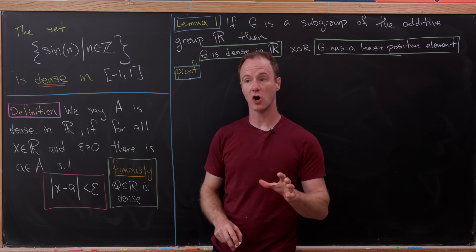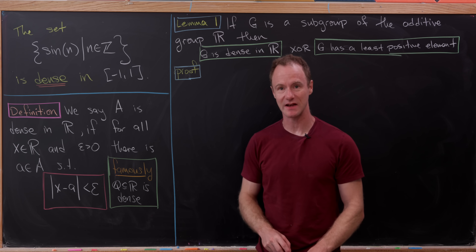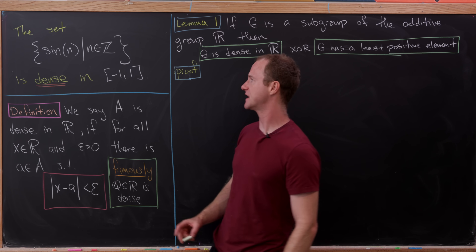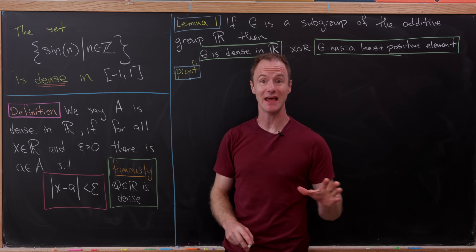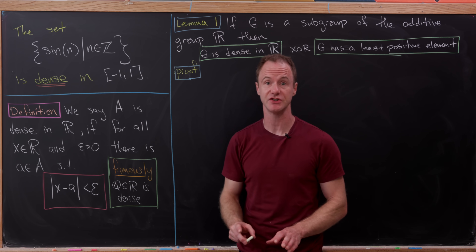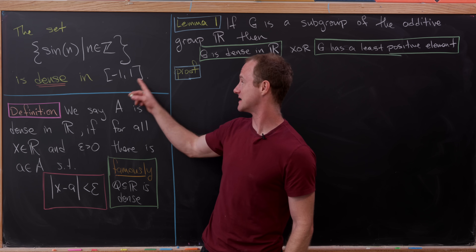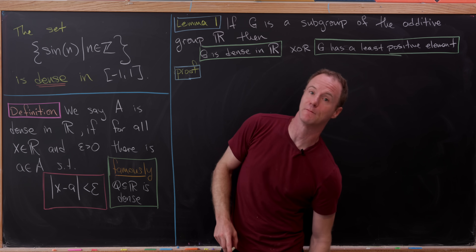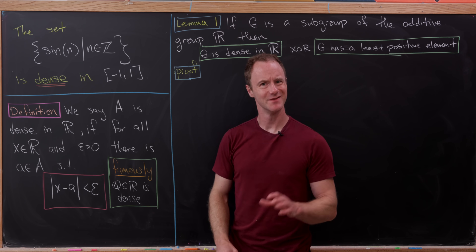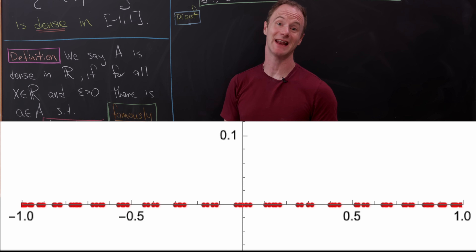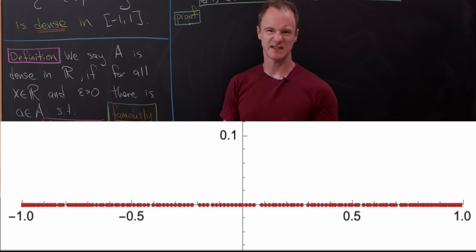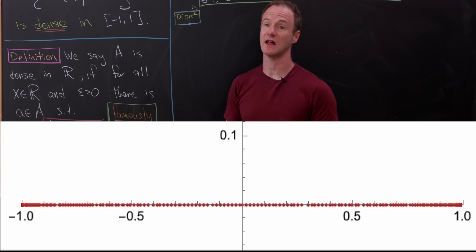Today we're going to look at a nice result regarding the density of the sine function. In particular, we're going to show that sine evaluated at n, as n ranges over all of the integers, is dense in the closed interval from minus one to one. On the screen you should be able to see an animation of sine of n as n goes from one to a thousand, and you can see it start to fill up that interval.